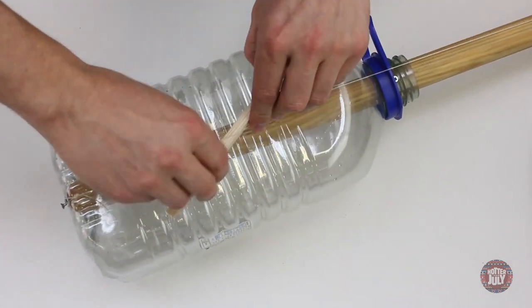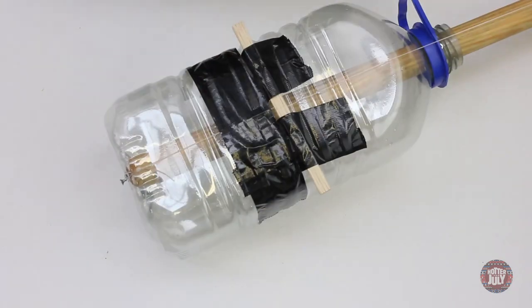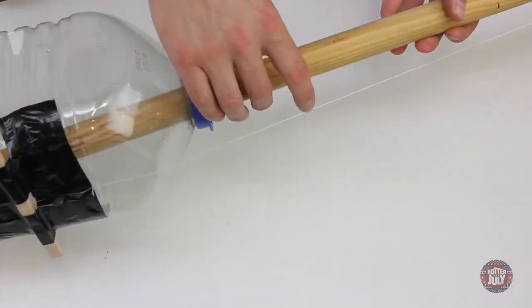To tension the string properly, I've wrapped a piece of wood around it, then firmly secured this to the body with some gaffer tape. At this stage the instrument should be making a decent sound.